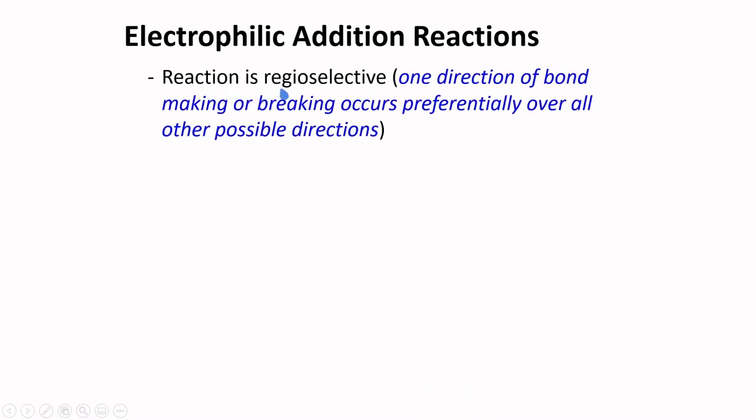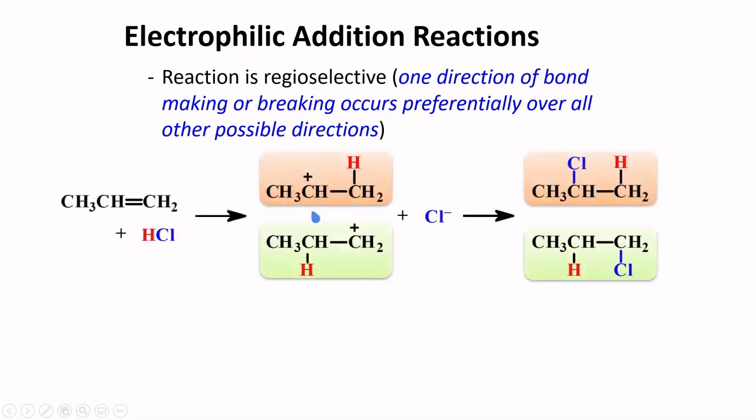Hydrohalogenation is considered regioselective. We consider a reaction as regioselective if one direction of bond making or bond breaking occurs preferentially over all possible directions. For such reaction where there are two possible routes, there will be a route which will dominate because it has lower energy of activation. This compound here will be the major product.